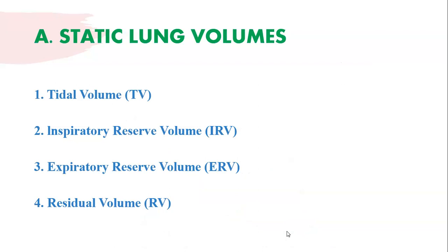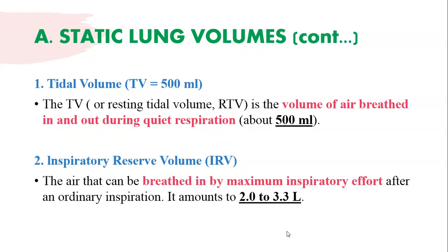The following volumes and capacities can be measured by spirometry, except the residual volume. For static lung volumes, there are four: tidal volume, inspiratory reserve volume, expiratory reserve volume, and residual volume. The first one, tidal volume (TV), is the volume of air breathed in and out during quiet respiration at rest — approximately 500 ml.